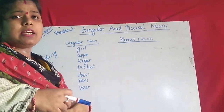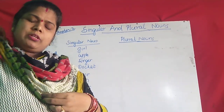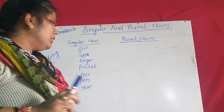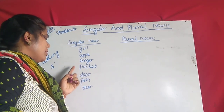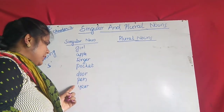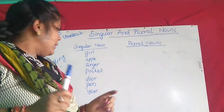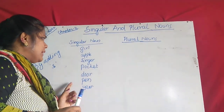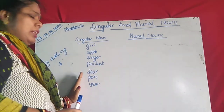What is singular? When a noun refers to one item, that is singular. Suppose: guy, apple, finger, pocket, door, pen — one door, one pen, one pocket, one pencil. These are the singular nouns.